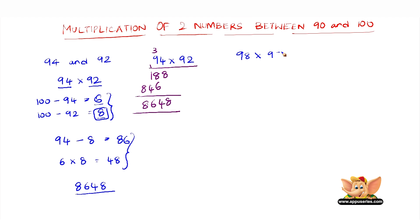98 into 97. All we have to do is subtract it from 100. That gives us 100 minus 98 is 2, and 100 minus 97 is 3. Choose the bigger of these numbers, subtract it from the bigger of these numbers. So that makes it 98 minus 3, which is 95.